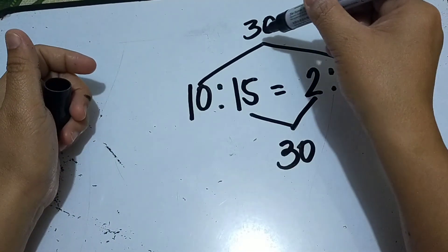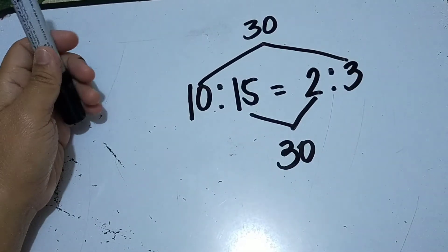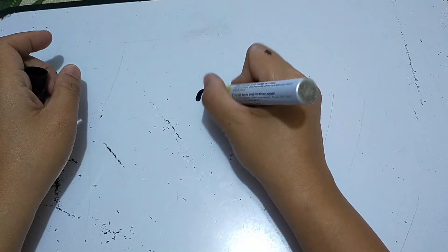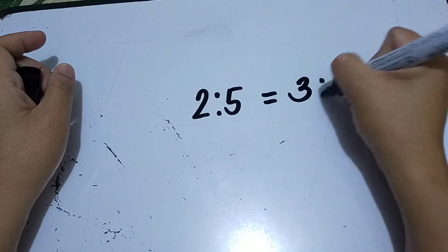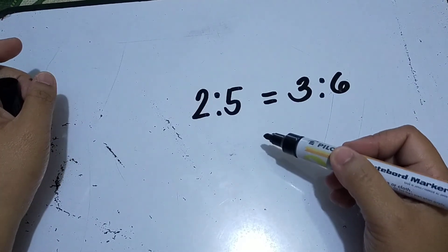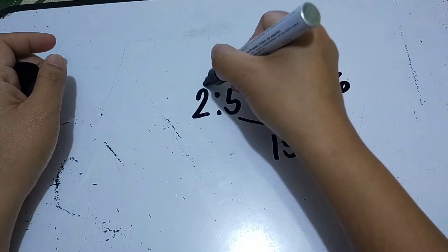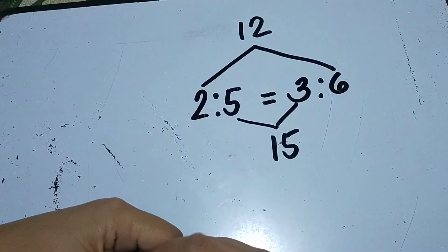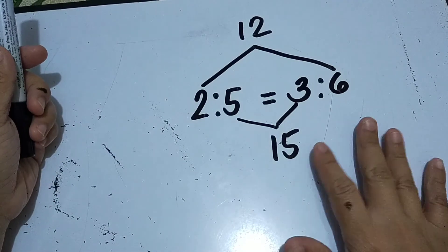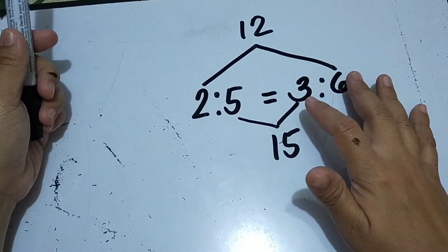The product of the means and the product of the extremes are the same. Another. 2 is to 5 is equal to 3 is to 6. Same process. Just multiply the means and then multiply the extremes. 5 times 3 is 15, 2 times 6 is 12. So therefore, the given is not equivalent ratios. Why? Because the product of the extremes is not equal to the product of the means.